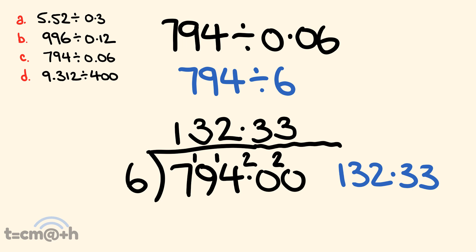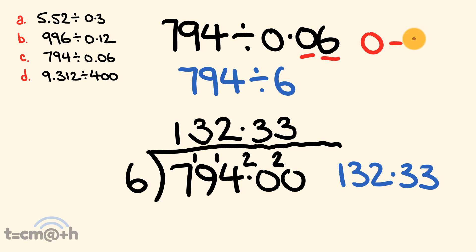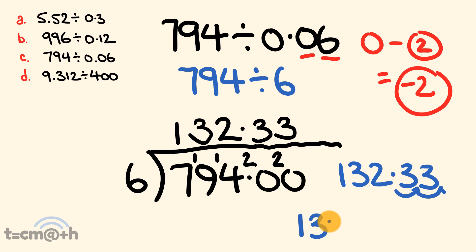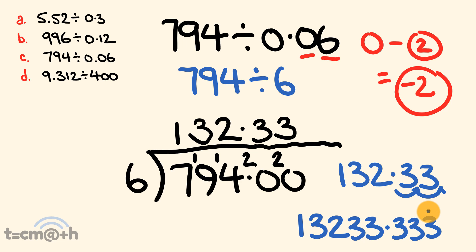We still have to deal with the decimals even though we already have a decimal point here. Looking at 794, we have no decimal places — zero decimal places. We are dividing by 0.06, which has 2 decimal places. So 0 take away 2 means we move the decimal 2 places to the right. So this decimal place moves to the right 1, 2 times. Our answer is 13,233, and you can continue on with 0.3333 onwards.